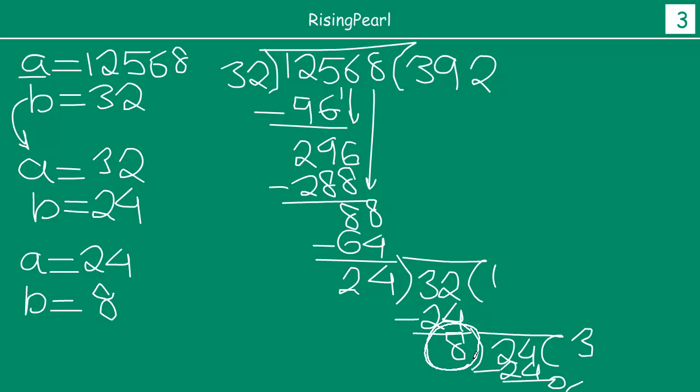So this 8 is going to be the HCF of these two original numbers. That is the HCF for these two numbers 12568 and 32 is going to be the number 8.